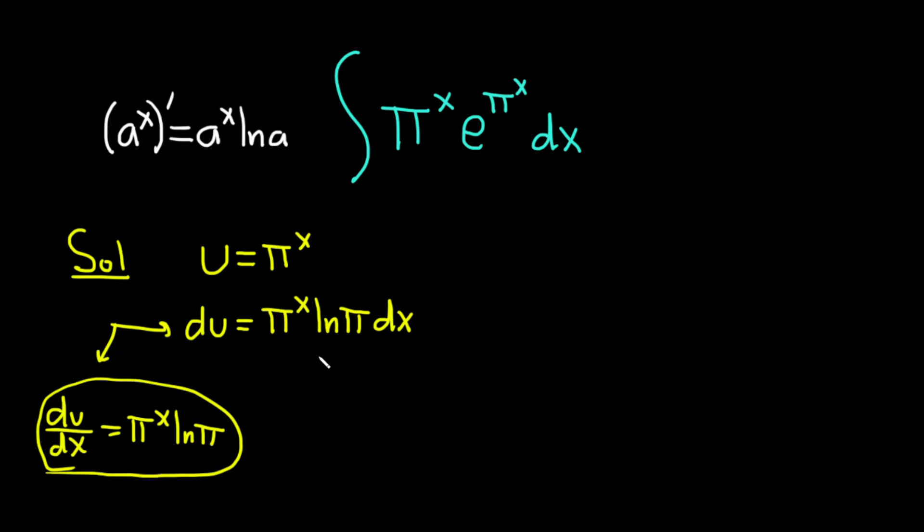Okay, now that we're here, we need to make this look like what's in our integral up here. So you notice we have this extra ln π. So let's get rid of it. So divide by ln π. This is gone. So we have du over the natural log of π. I'll write it up here. Equals, and then we have π to the x dx.